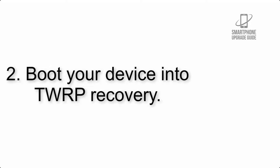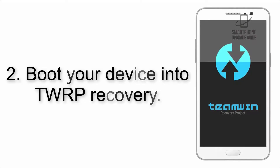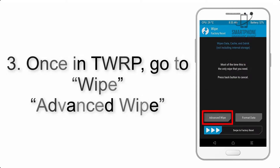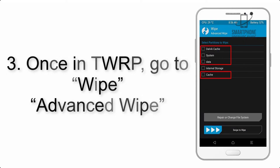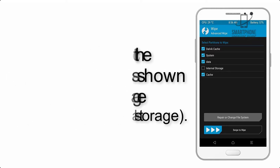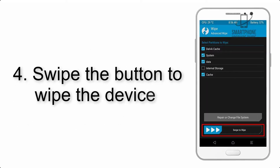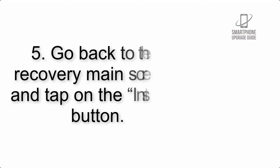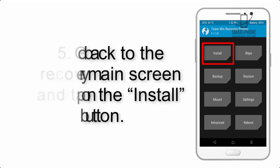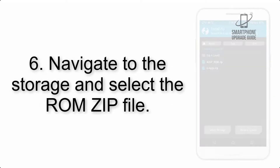Step 2: Boot your device into TWRP recovery. Once in TWRP, click on Wipe, then Advanced Wipe, and select the checkboxes as shown in the image, excluding internal storage. Step 4: Swipe the button to wipe the device.